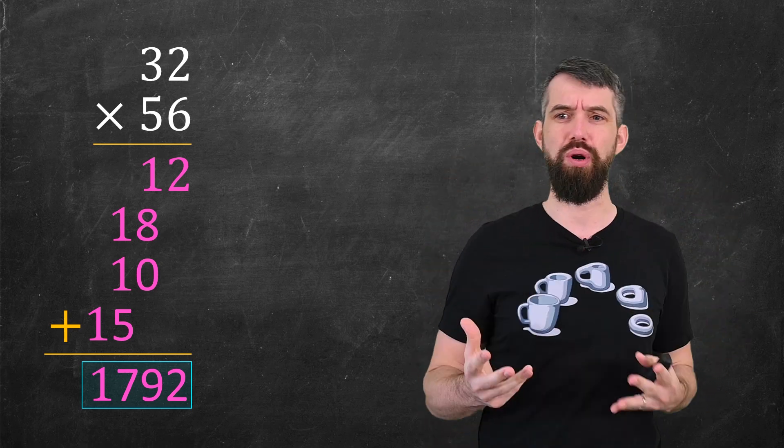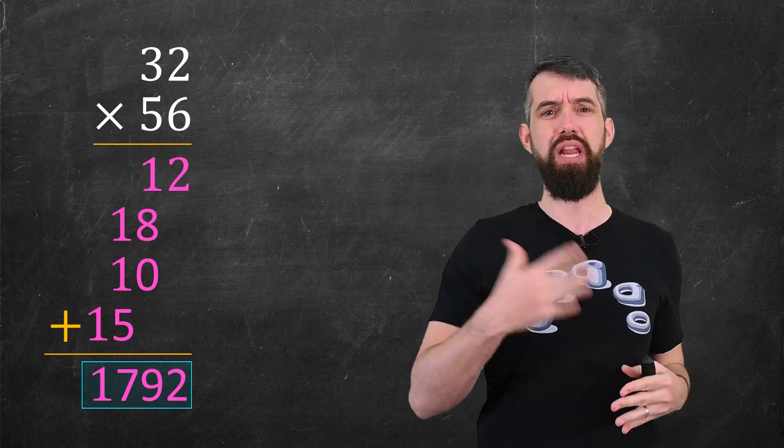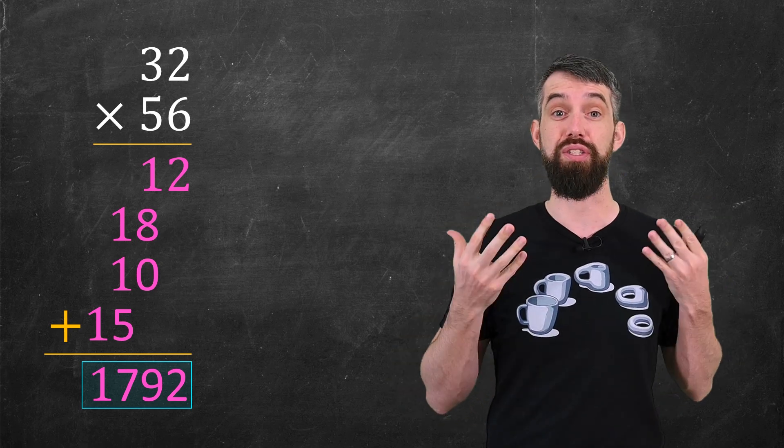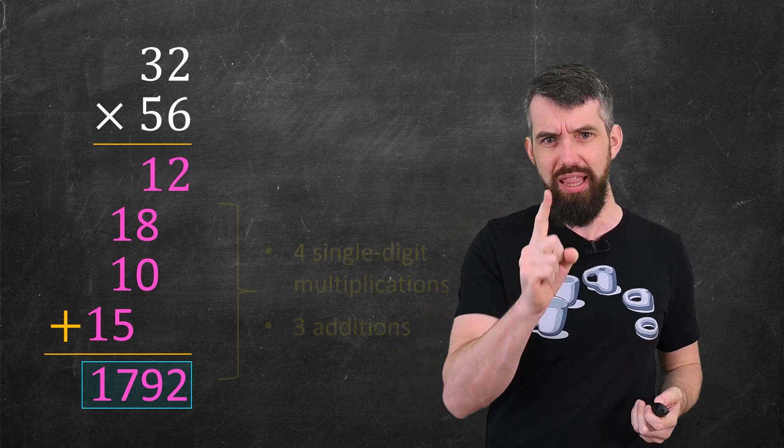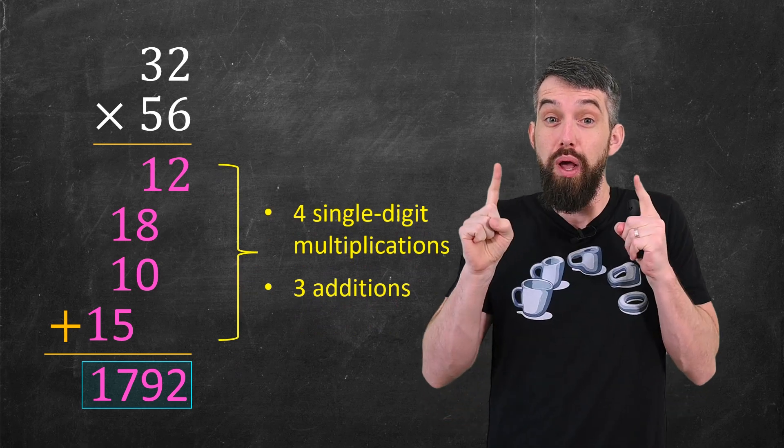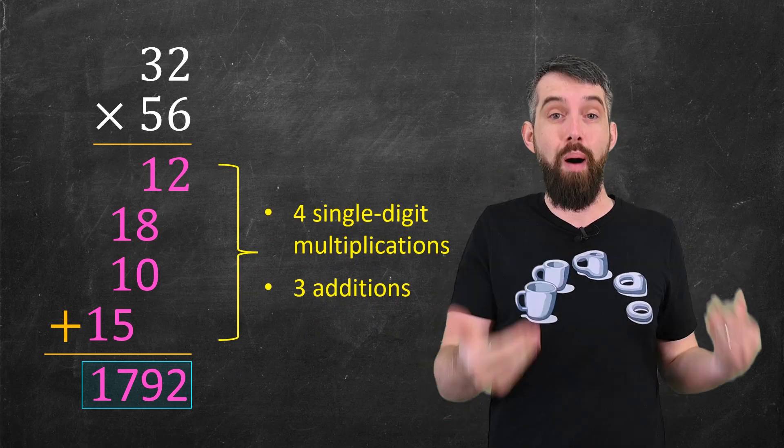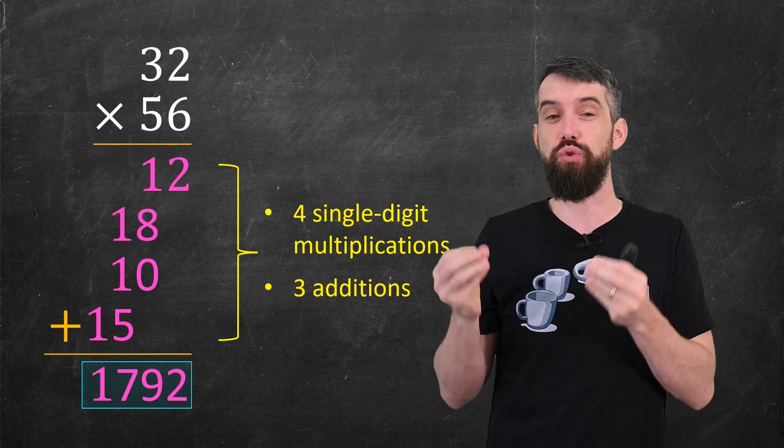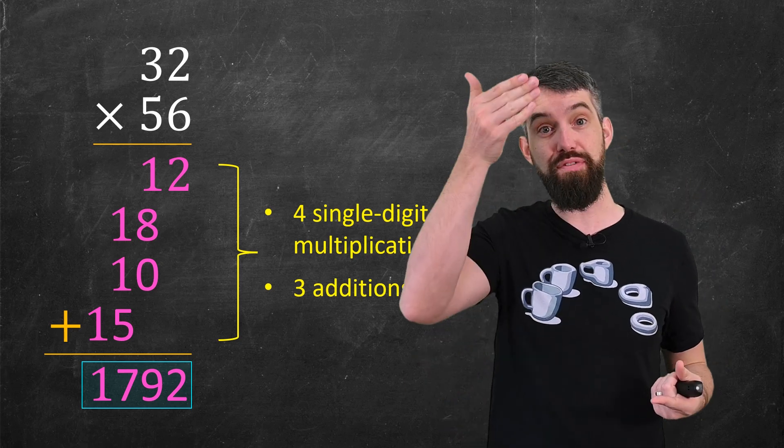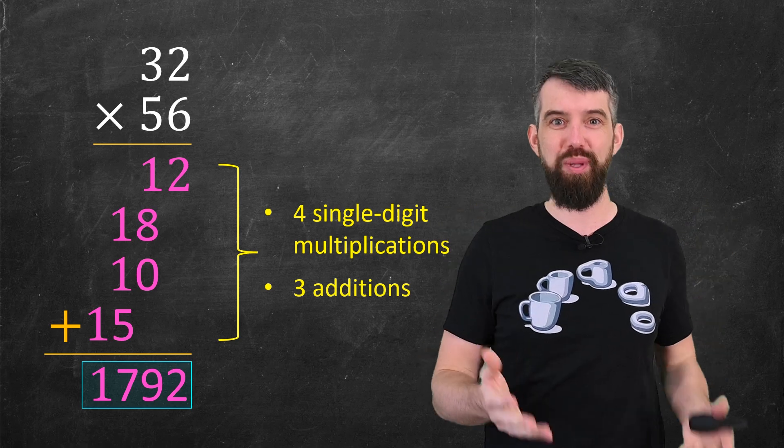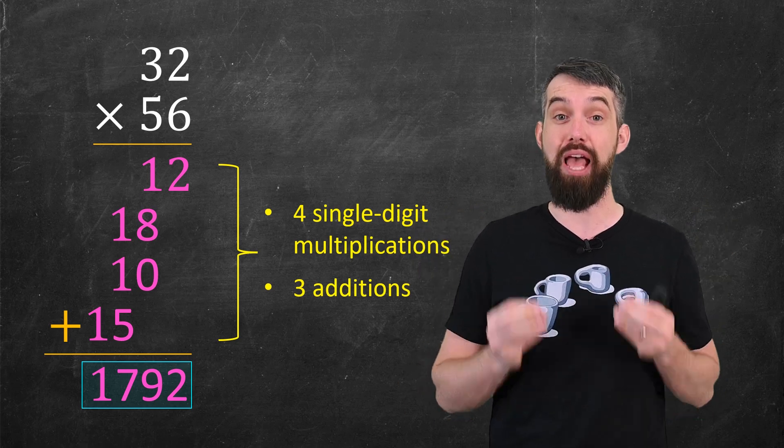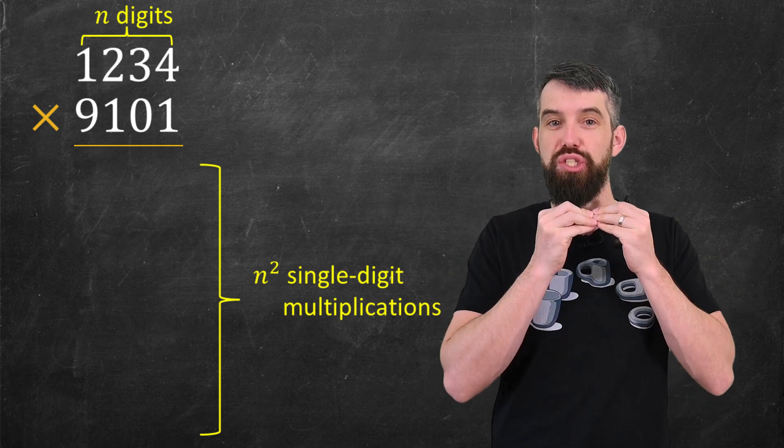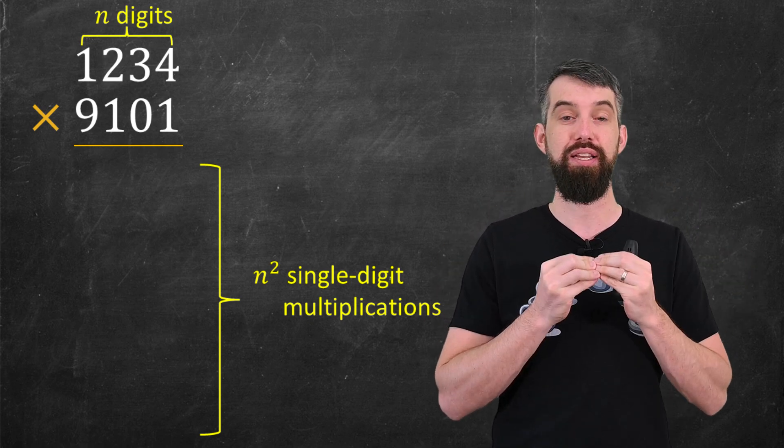Depending on exactly how you were taught and where in the world you might organize your information a little bit differently, but this is the basic algorithm that most of us are familiar with. And what I really want to note is that in this algorithm you have to do four different sub-multiplications. So there's four multiplications and three additions to do this algorithm. And in general if you're multiplying two n-digit numbers together it takes n squared total multiplications to get your answer.